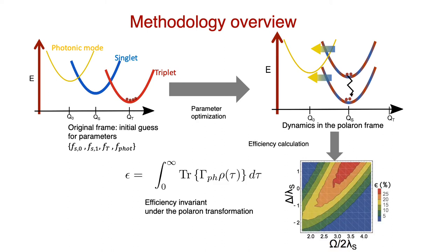And then we can calculate the efficiency for any set of parameters. And in this case, we chose parameters of elements experimentally, namely the detuning and the collective coupling of the singlets to the photon mode, or in other words, the Rabi splitting.